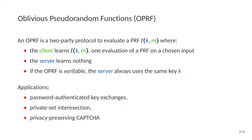An oblivious pseudorandom function, or OPRF, is a two-party protocol where a client and a server jointly evaluate a pseudorandom function F, whose input is a value M chosen by the client and a key chosen by the server. In particular, we want the client to learn the output of the evaluation — F of K and M — but nothing else. So the client shouldn't be able to evaluate the function on any other input without interacting further with the server. And conversely, we want the server to learn nothing, so the identity of the client must remain protected, as well as its input.